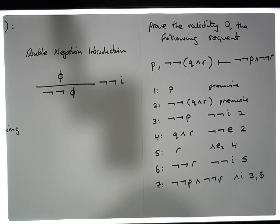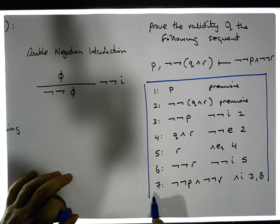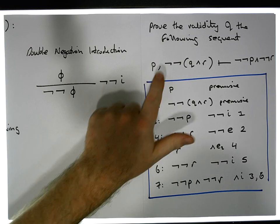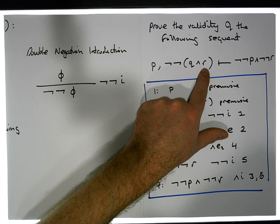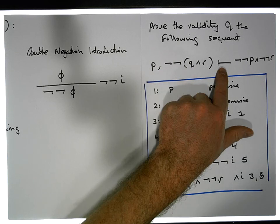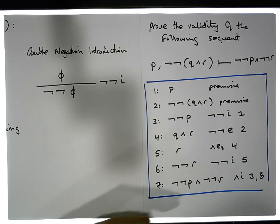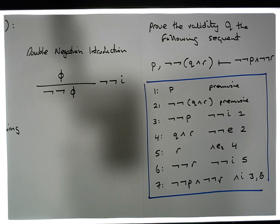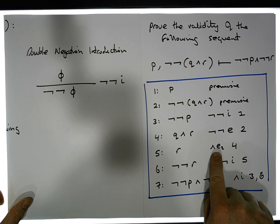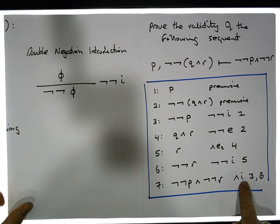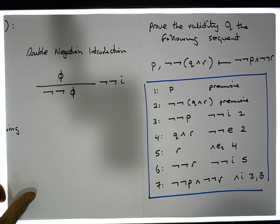We've proven through this natural deduction system that if p is true and the double negation of (q ∧ r) is true, then we can conclude that ¬¬p ∧ ¬¬r is also true. This proof used AND elimination, AND introduction, double negation introduction, and double negation elimination — four of our rules, out of about fifteen.